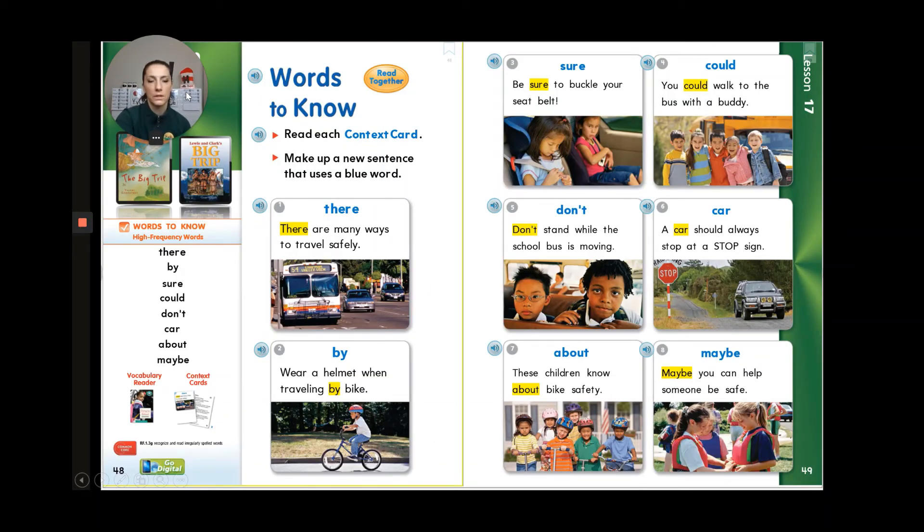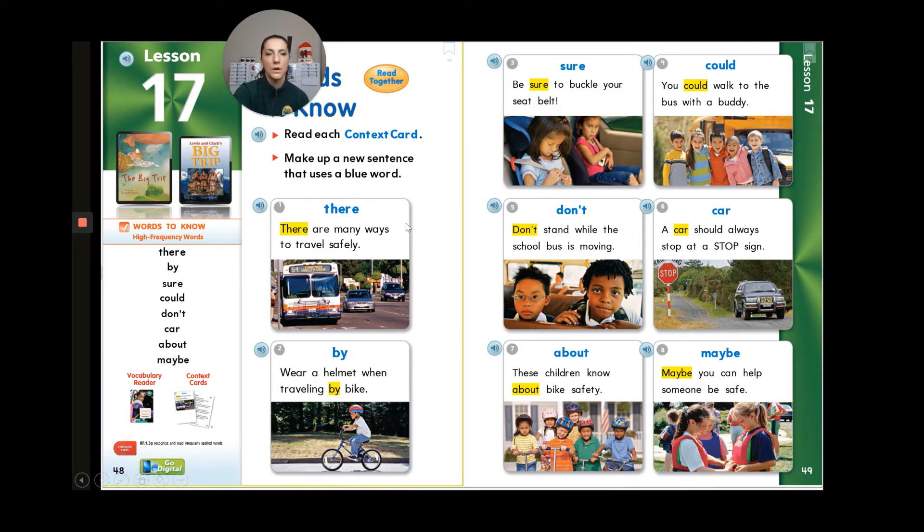Now let's look at our high-frequency words. Number one, let's read these together. There are many ways to travel safely. There is our word. Now remember this there means there are or way over there or I've left my boots right there. Number two is by. Wear a helmet when traveling by bike. Number three, sure. Be sure to buckle your seatbelt. And this is also a homonym because there's the shore, like I'm going to go to the shore this weekend, the Jersey shore, that shore is S-H-O-R-E, meaning by the beach. This sure, like yeah, sure, I'll go with you, that's S-U-R-E, sure. That is our high-frequency word.